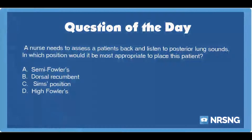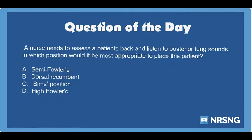The nursing category is respiratory. The NCLEX category is health promotion and maintenance. A nurse needs to assess a patient's back and listen to posterior lung sounds. In which position would it be most appropriate to place this patient?